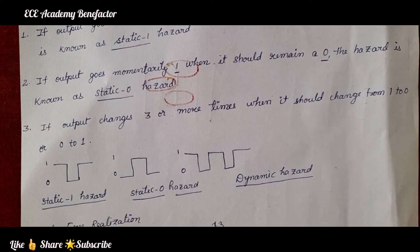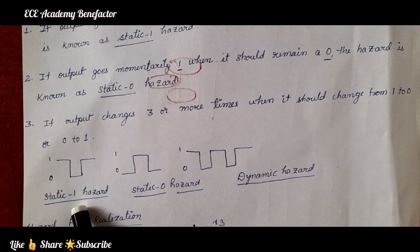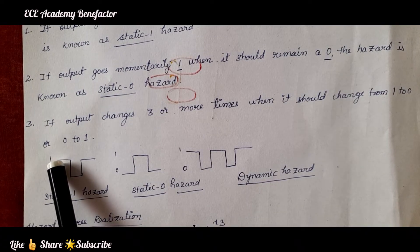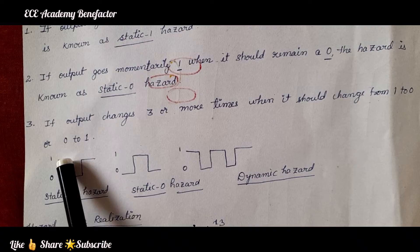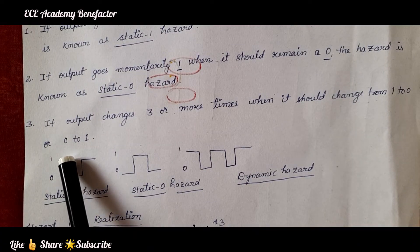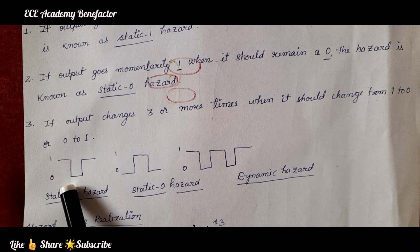So, in a waveform form, we can explain like this. Static 1 hazard, the output should be at 1. The output should be held to 1, but it is momentarily changing to 0. So, this is known as static 1.